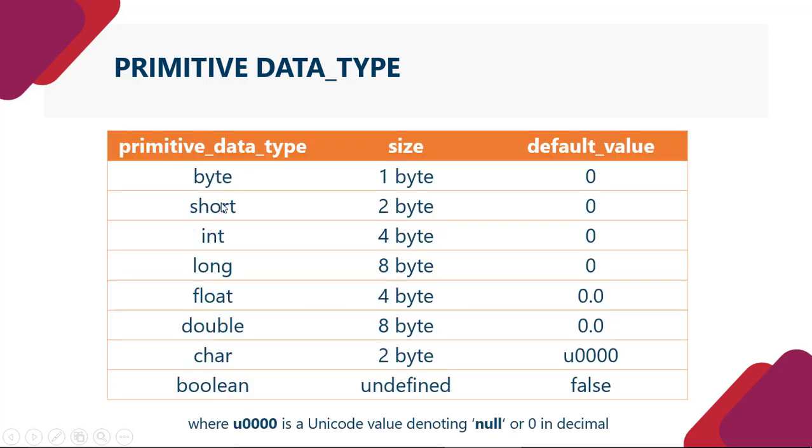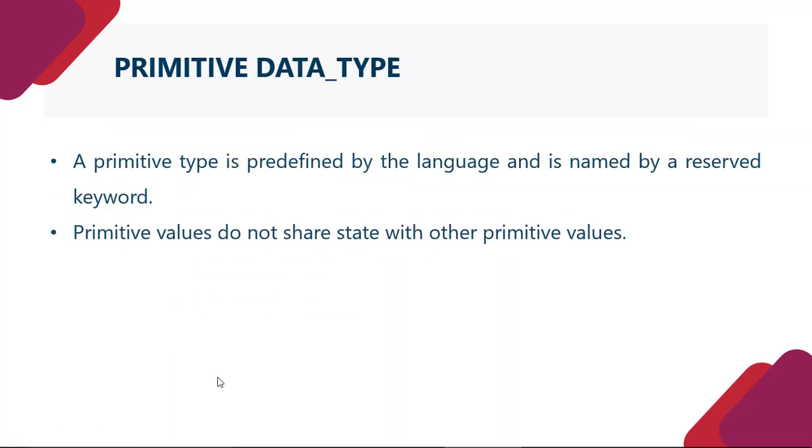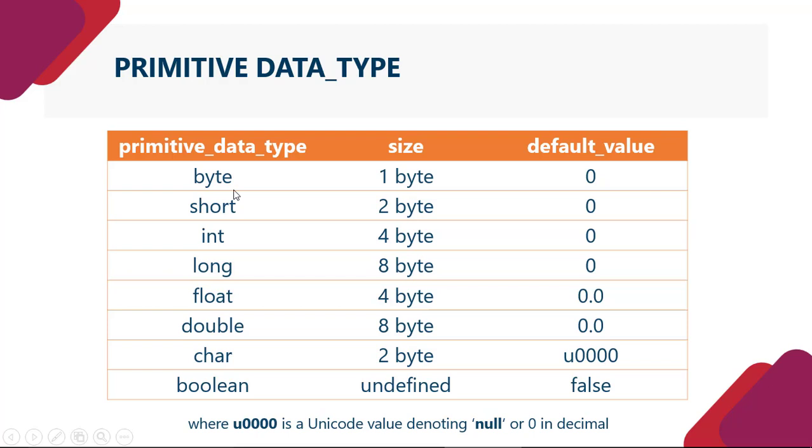Primitive data type - byte, short, int, long, float, double, char, and boolean. Toh jo humne yahan par use kara, primitive type is defined by the language and is named by a reserved keyword. Toh jitne bhi hai - byte, short, int, long, float, double, char, and boolean - yeh sare ke sare keywords hain Java mein.